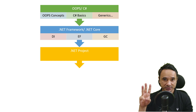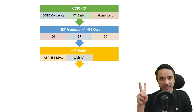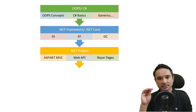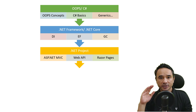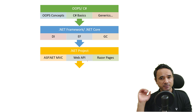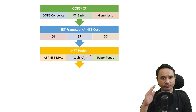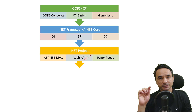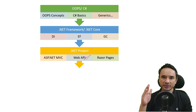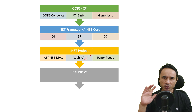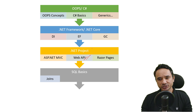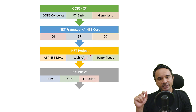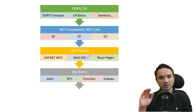After learning the framework, learn about one of the .NET project types: ASP.NET MVC, Web API, or Razor Pages. Depending on your past experience, you can choose any one of them. Nowadays Web API is very much in demand, so if you know ASP.NET MVC or Razor Pages, your next step should be to learn Web API. After completing this, learn SQL basics — things like joins, stored procedures, functions, and indexes.